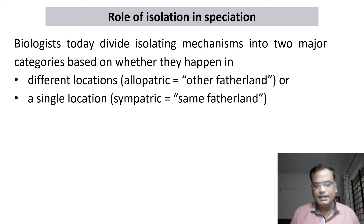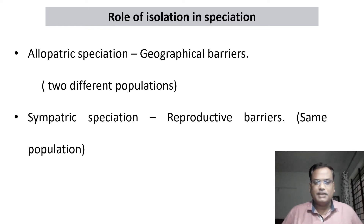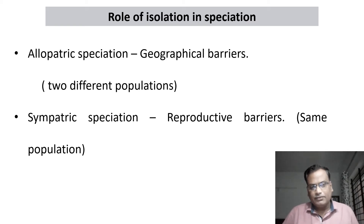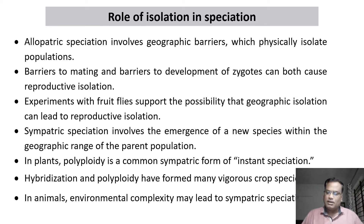Don't get confused with what we studied previously about allopatric and sympatric speciation — it's the same thing. Allopatric speciation occurs due to geographical barriers separating two populations, whereas sympatric speciation is due to reproductive barriers. Barriers to mating and barriers to the development of zygotes can both cause reproductive isolation.